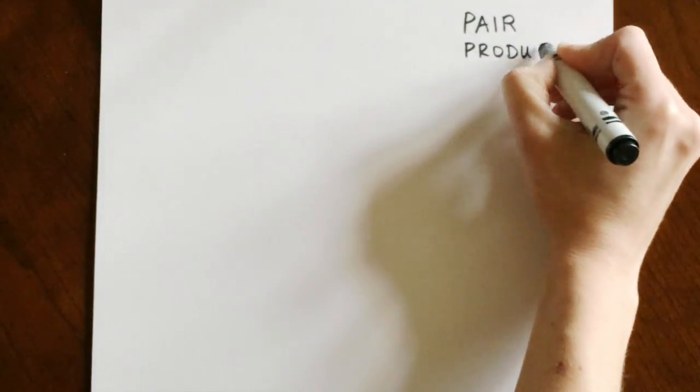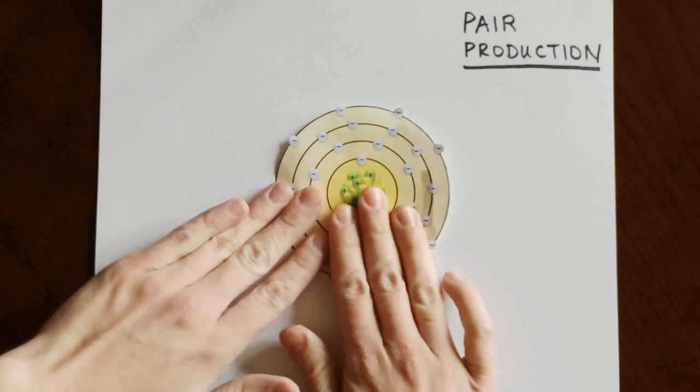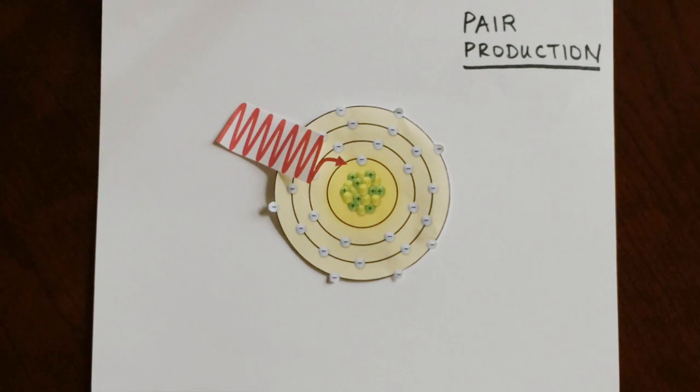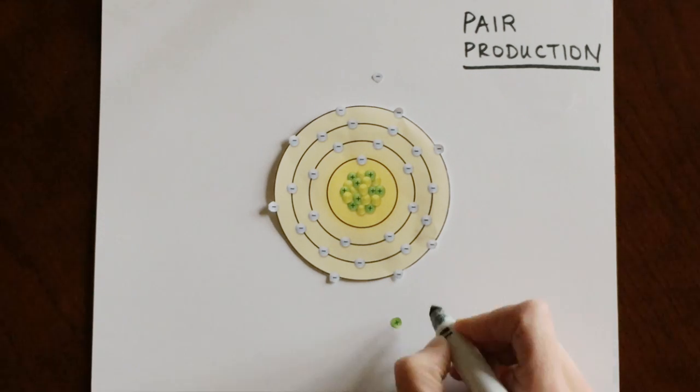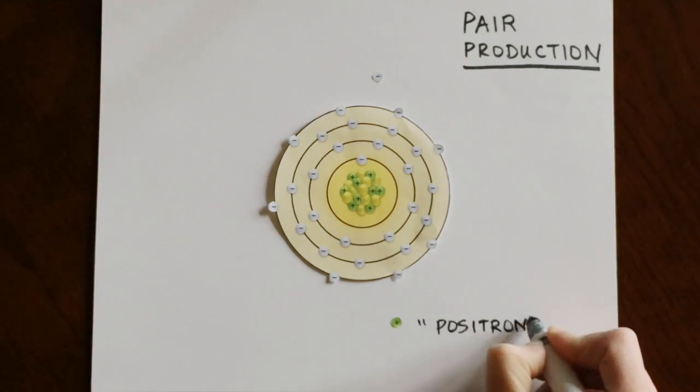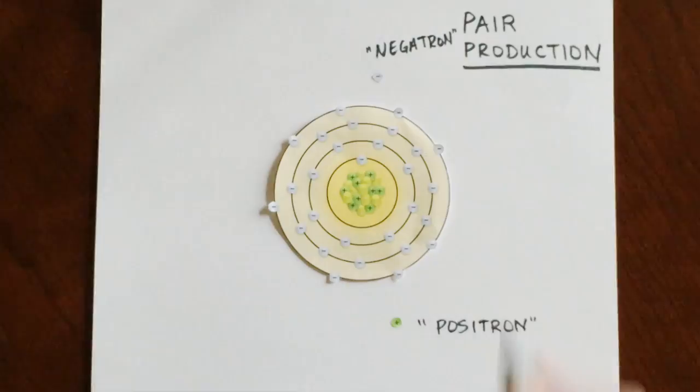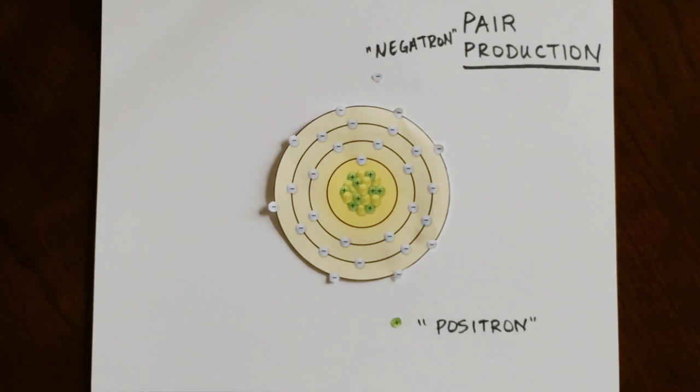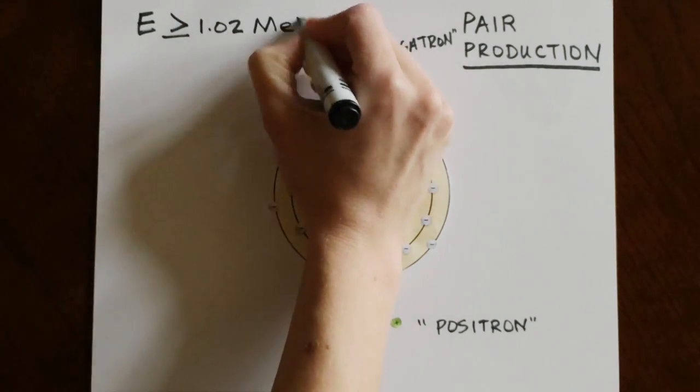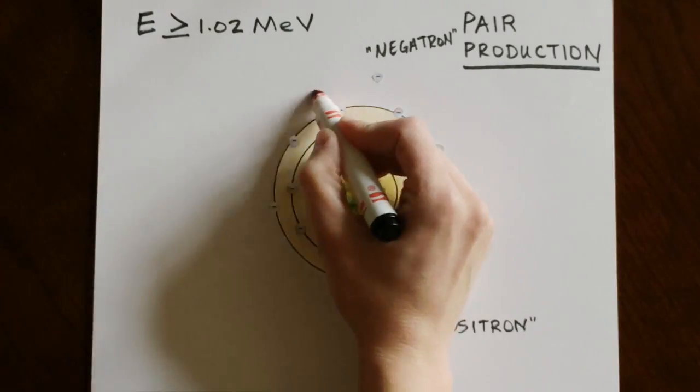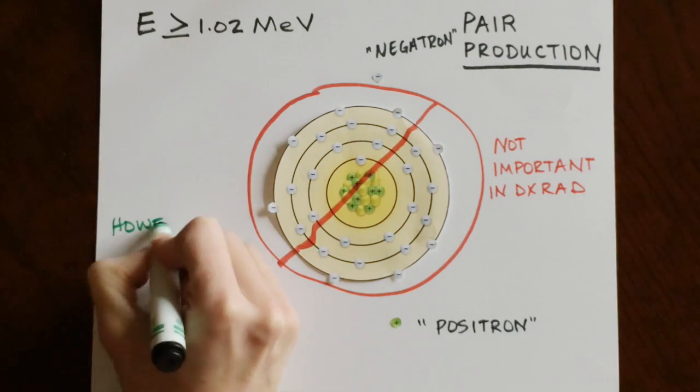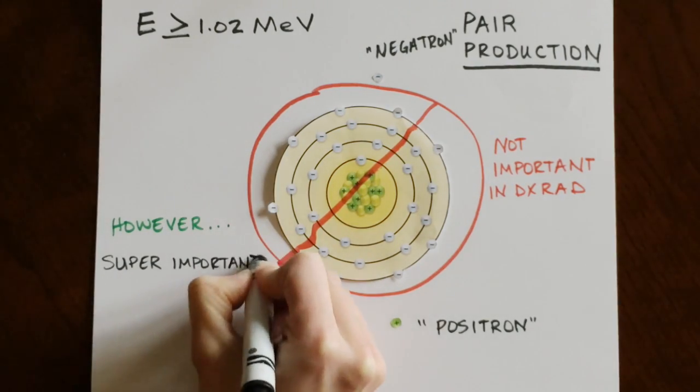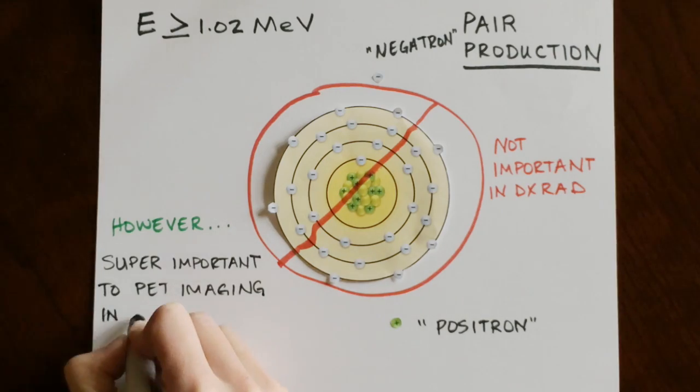If an x-ray photon has enough energy, it will bypass the electron shells and interact with the nuclear field. In this interaction, the x-ray photon disappears and a pair of electrons appear, one positively charged, called the positron, and one negatively charged, called the negatron. This is why this interaction is called pair production. Since the energy of the x-ray photon must be at least 1.02 mega electron volts, this interaction is unimportant in x-ray imaging. It does, however, have great importance to positron emission tomography or PET imaging in nuclear medicine.